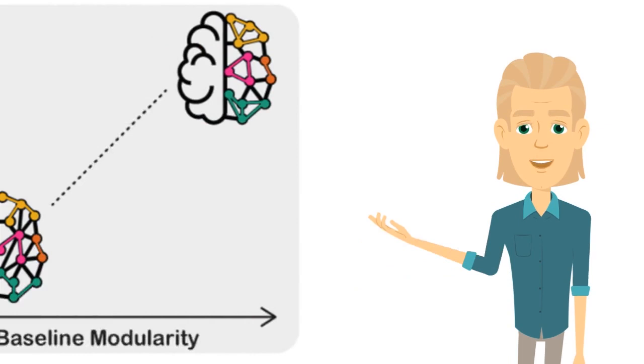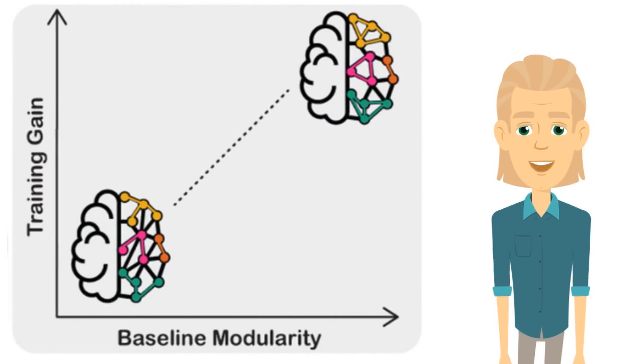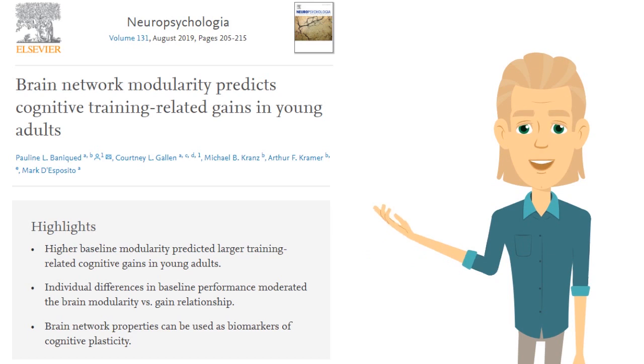The evidence is accumulating that how much brain network modularity a person has, whether they're young or old, is the best way of telling how much they're going to benefit from their cognitive training. Here's research published by a team at the University of California, Berkeley, looking at young adults. It concludes higher baseline modularity predicted larger training-related cognitive gains in young adults.